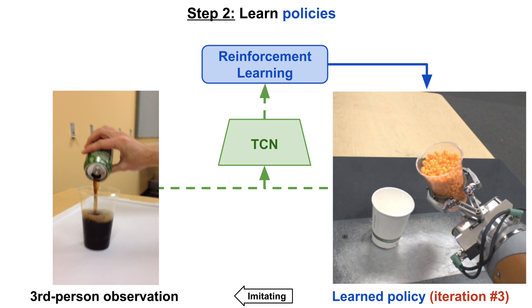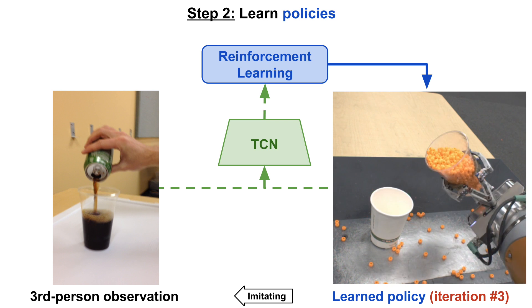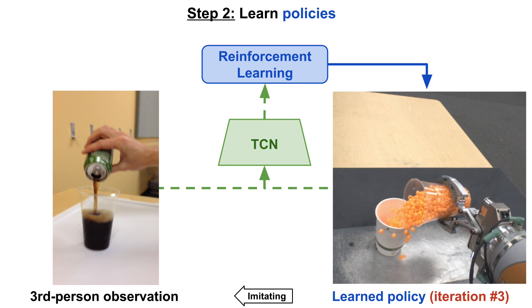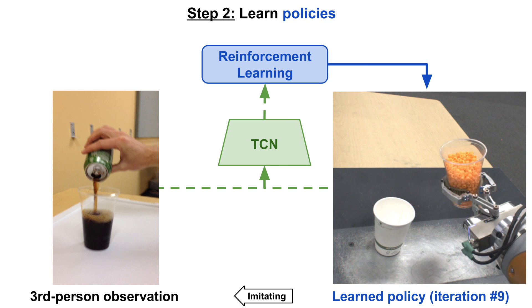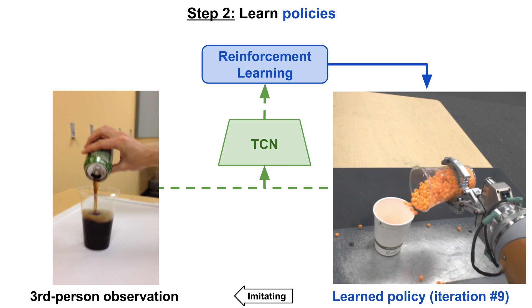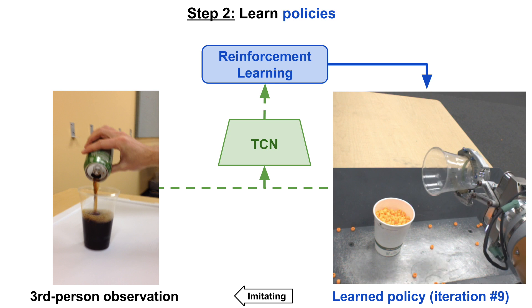The robot arm initially tries random motions, then learns to reuse the controls yielding the highest rewards, and finally converges to reproducing the demonstrated task. The model converges after only nine iterations, which is about 15 minutes of real-world training time.